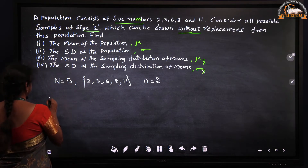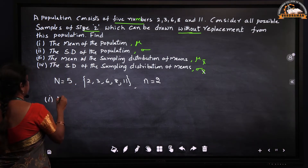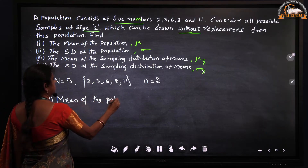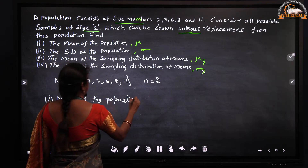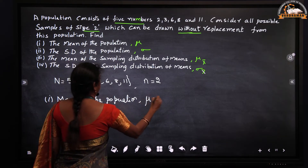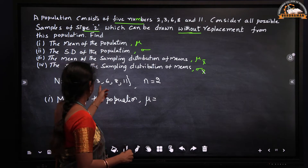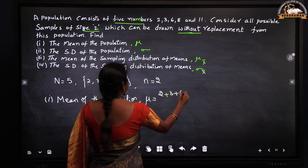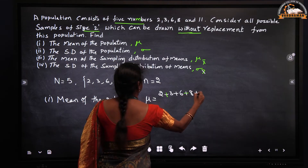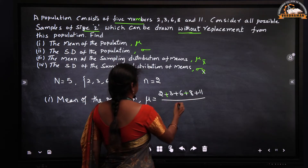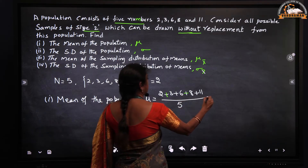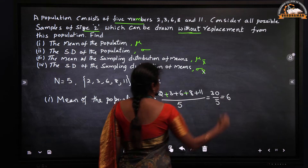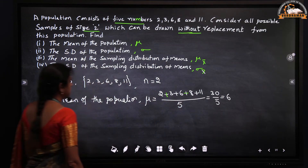First I will find the mean of the population, given by mu equal to sum of the values divided by N. That is 2 plus 3 plus 6 plus 8 plus 11, divided by 5, which is equal to 30 by 5, which is equal to 6. So the mean of the population is 6.